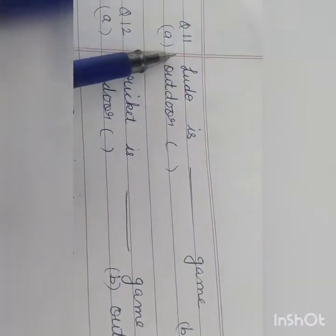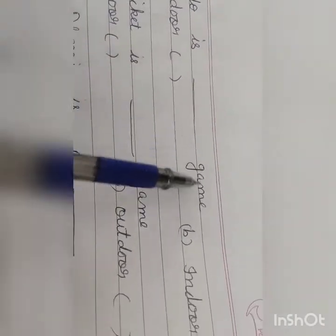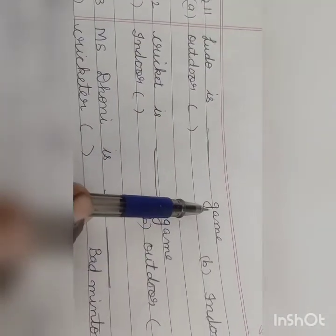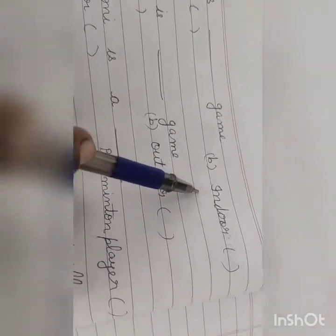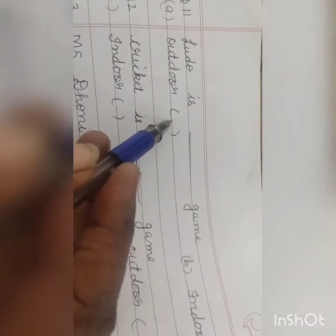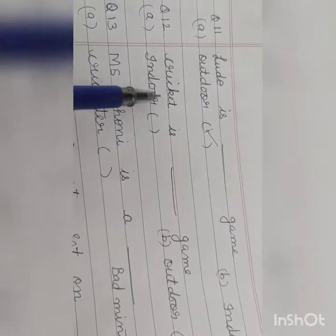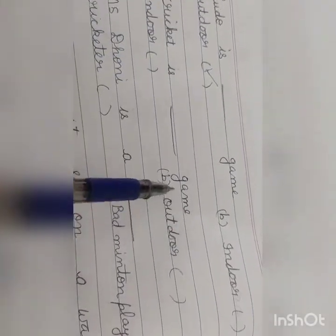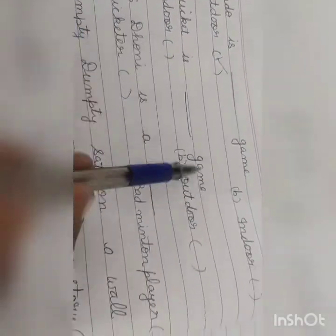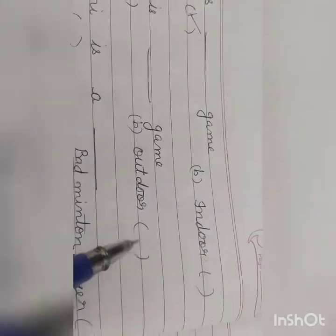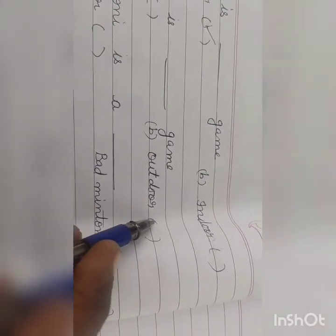Now see the eleventh question children. Ludo is dash game. Ludo कौन सा game है, outdoor game है की indoor game है? So we will put a tick mark on outdoor. See the twelfth one, cricket is dash game. Cricket कौन सा game है? Cricket हम घर के अंदर नहीं खेल सकते हैं. So cricket is an outdoor game.